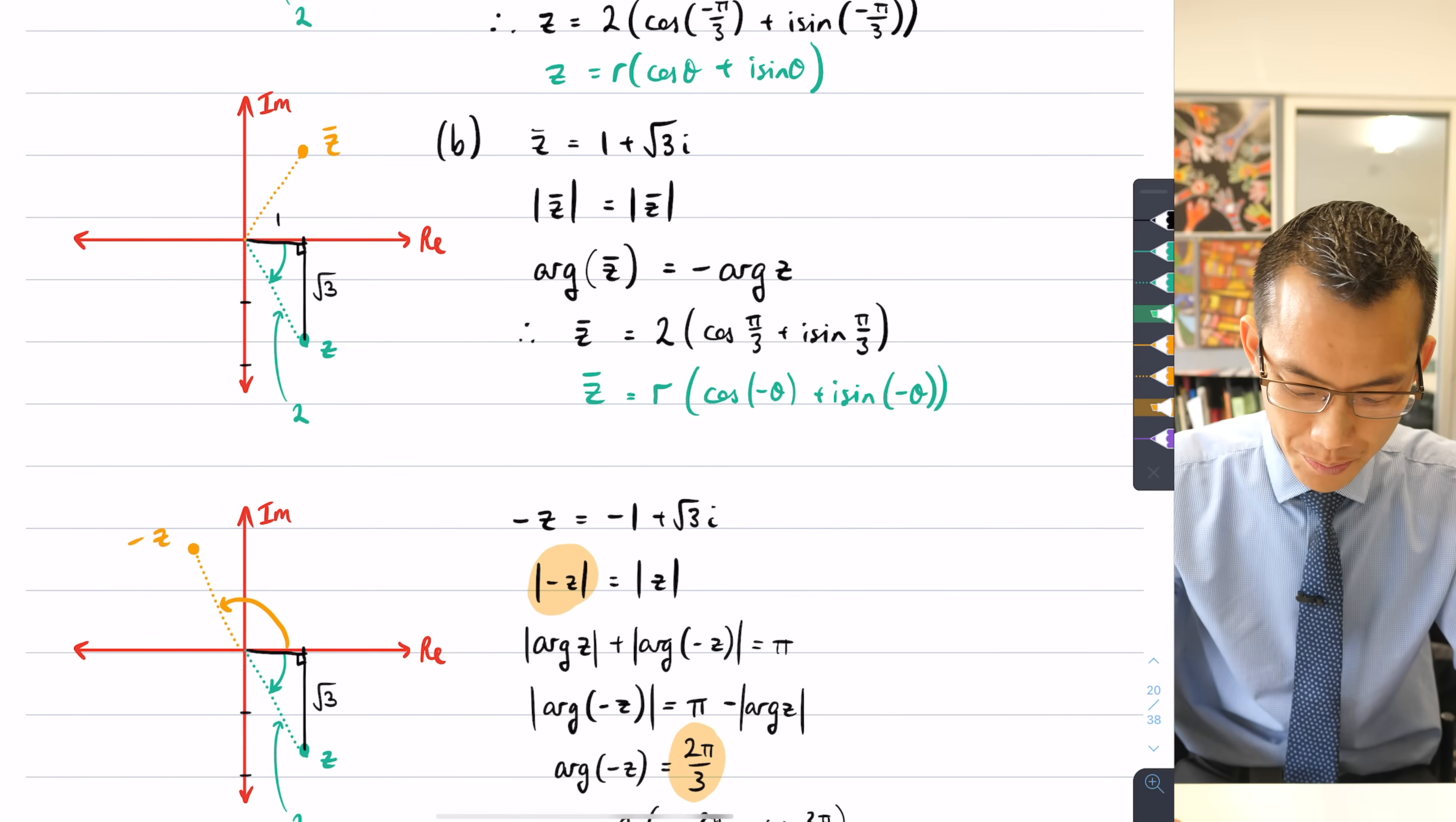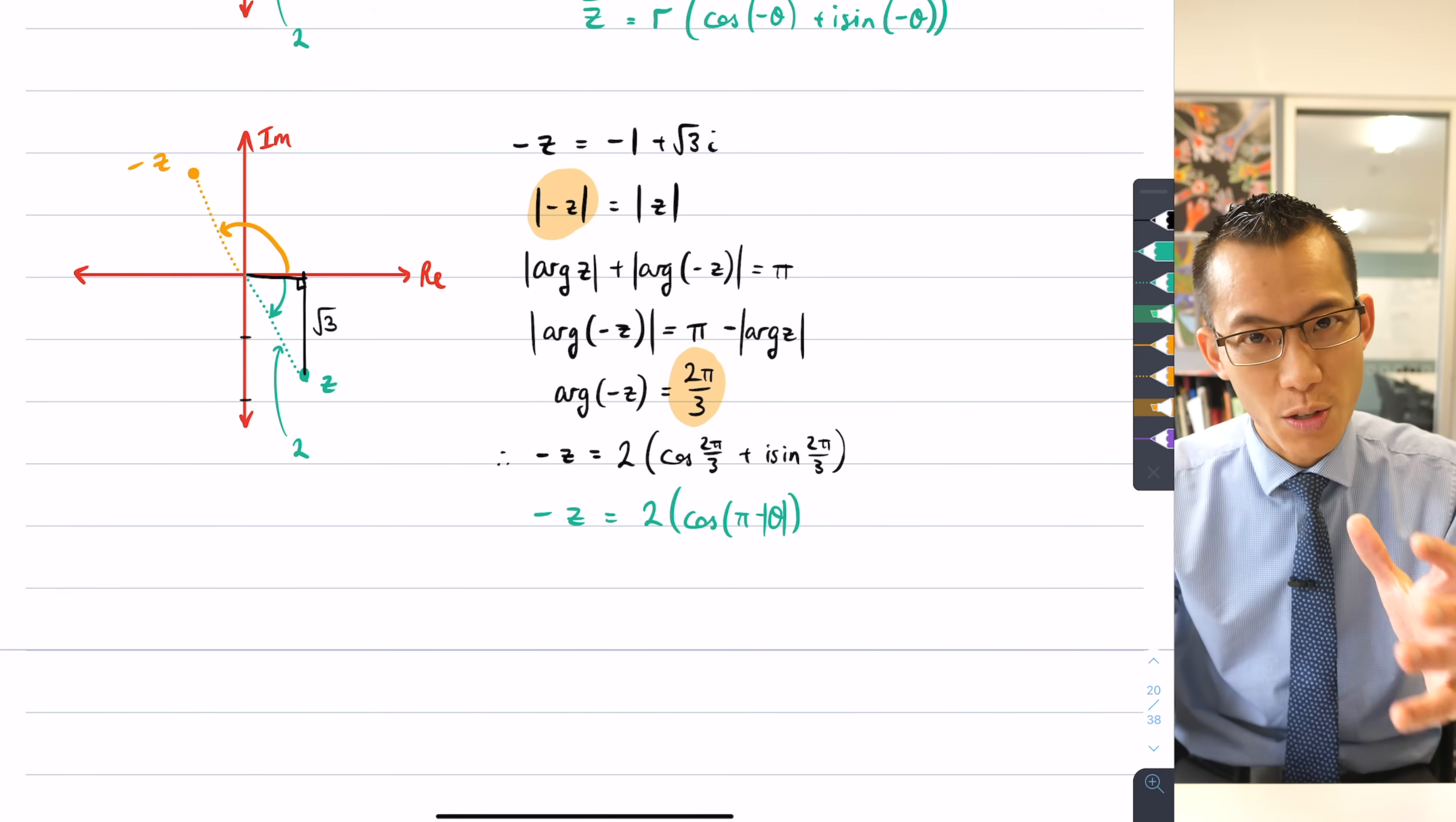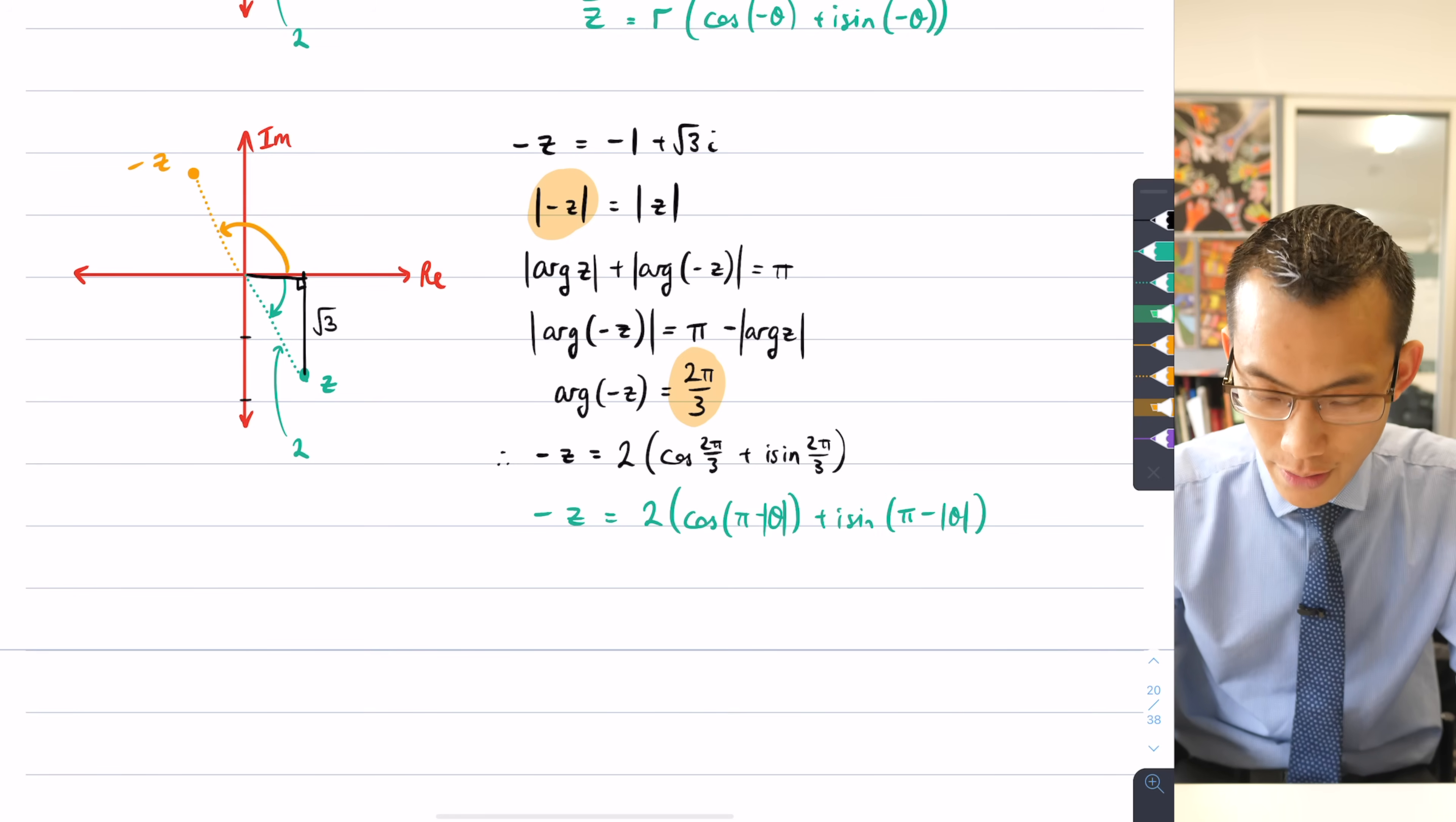And you've got to be really careful here because you've got these negatives, so when I say θ, I really should put the absolute value signs around it, so I just need the size of that angle, plus i sin(π - ...).